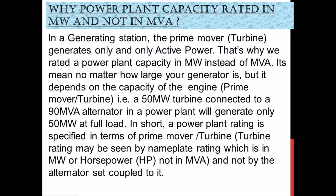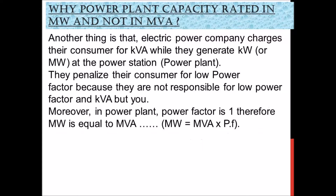In short, a power plant rating is specified in terms of the prime mover or turbine. The turbine rating may be seen on the nameplate rating, which is in MW or horsepower (HP), not in MVA, and not by the alternator set coupled to it.